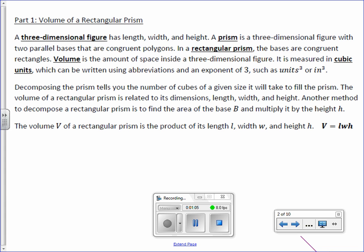Another method to decompose a rectangular prism is to find the area of the base (capital B) and multiply it by the height. The volume V of a rectangular prism is the product of its length l, width w, and height h.